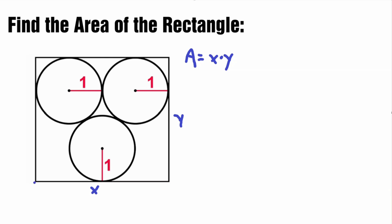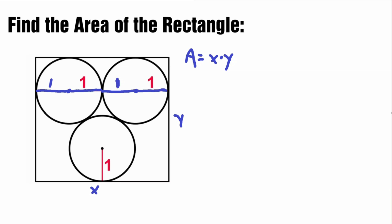Let's start with the x side length here. The side length goes from here to here. We can see that if it goes across like this, this radius here will be included and this radius here will be included. Remember, the radius is the distance from the middle point to any outer point of the circle. So if the radius is 1, the distance from the middle point to the outer point is 1. The same goes here — this length is also 1. So all these radii together make up our x value. Adding them: 1 plus 1 plus 1 plus 1 gives us x equal to 4.